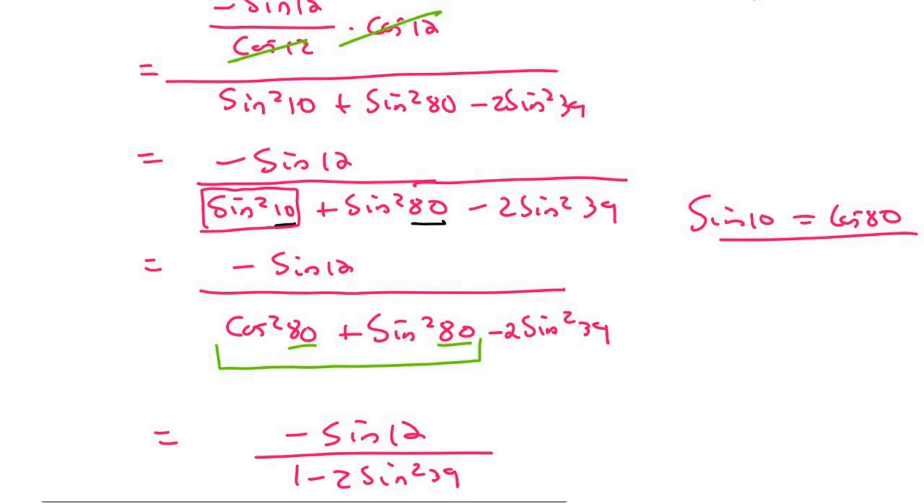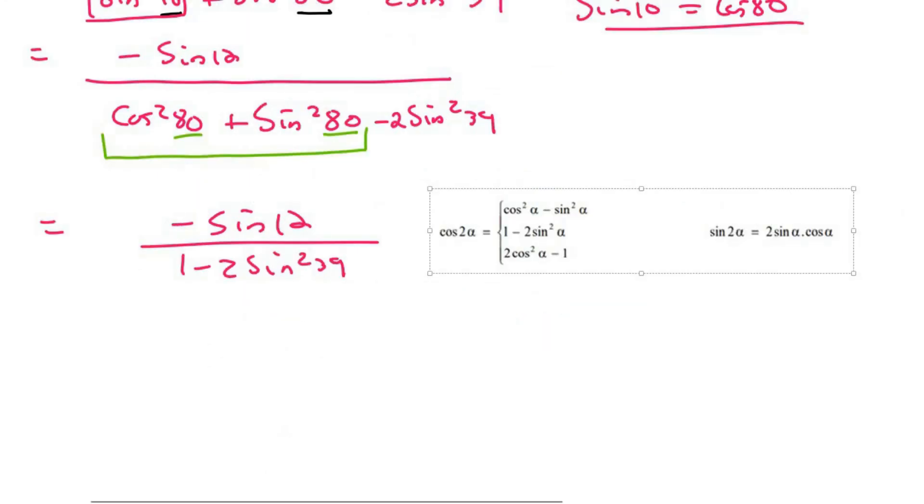Let's go get our formulas. Now what I'm identifying is this part over here. See that? And so what we can do is we can rewrite it as cos 2x. And so that's going to be negative sin 12 at the top. And then at the bottom we're going to end up with cos of 2 times 39 which is 78.